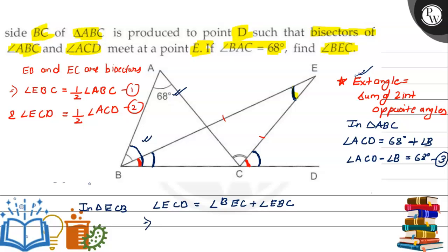So we can write this using equation 2, that angle ECD is equal to angle ACD by 2. We can see this is angle ACD by 2. Angle BEC is what we need to find, and angle EBC we can see from equation 1, it is equal to angle ABC by 2.